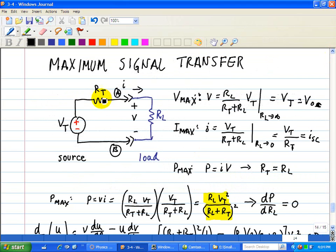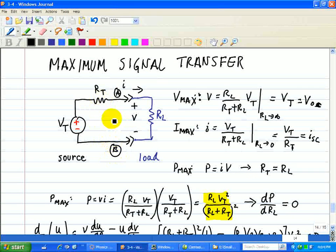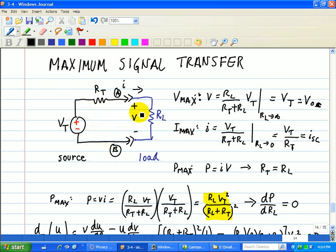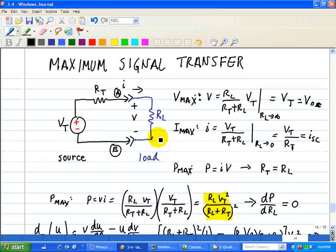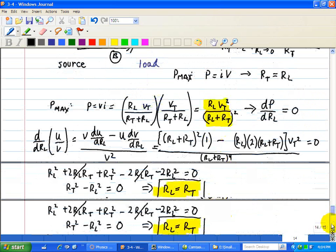To summarize, at an interface with a fixed source, the maximum available voltage is when the voltage is open-circuited, or RL is equal to infinity, and the maximum available current is the short circuit current when RL is equal to 0. And finally, the maximum available power is the product of one-half of the open circuit voltage and one-half of the short circuit current, as shown here.